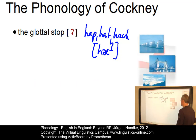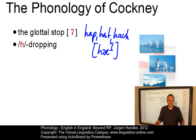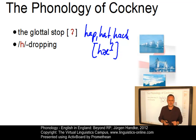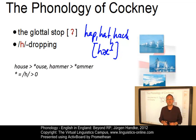A second feature is H-dropping. This occurs word-initially in working class accents throughout England, but it is certainly heard more in Cockney than elsewhere. The usage is strongly stigmatized by teachers and many other standard speakers. Examples would be words such as 'house,' which becomes 'ouse,' or 'hammer,' which becomes 'amma.'